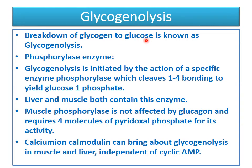Glycogenolysis is the breakdown of glycogen to glucose. This process involves the phosphorylase enzyme, which is very important in its activation. This phosphorylase enzyme is present in both muscle and liver. Glycogenolysis is initiated by phosphorylase, which is mainly involved in the breakdown of 1,4 bonding, converting glycogen into glucose-1-phosphate.